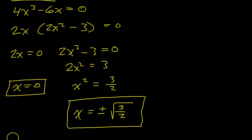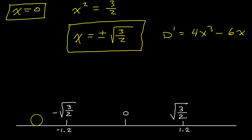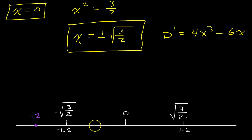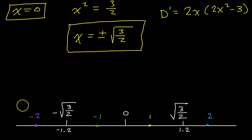Let's put these on the number line. These critical numbers separate the number line into 4 intervals and we will have to do a test value in each interval. Keep in mind that the square root of 3 over 2 is approximately 1.2. So let's do a test value of negative 2 in the first interval, negative 1 in the second, positive 1 in the third, and positive 2 in the fourth.